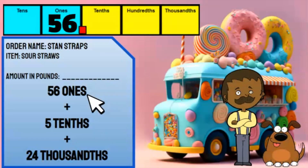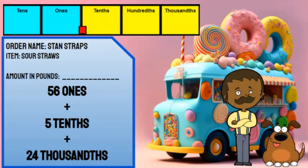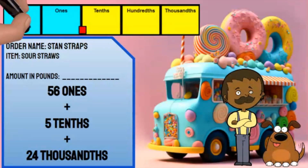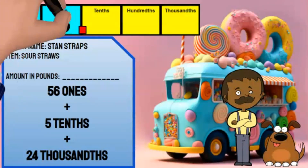I can't have a two-digit number in the same place value. I have to regroup 56 ones as five tens and six ones.